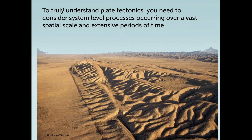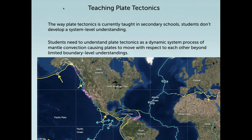To really understand plate tectonics, you need to consider it from a system-level process, which occurs over vast spatial scale and over extensive periods of time. The way plate tectonics is currently taught in schools, students don't develop system-level understanding. Penn State research has shown that students have difficulty thinking about plates as an interacting system, because they're taught by introducing each boundary individually with a lot of historical data, but never thinking about them together as a system process of mantle convection causing plates to move with respect to each other. In other words, they never get beyond the limited plate boundary level understanding.